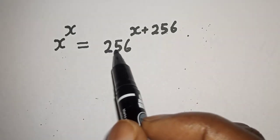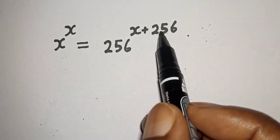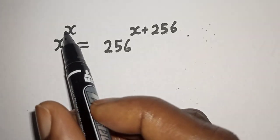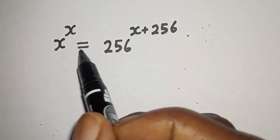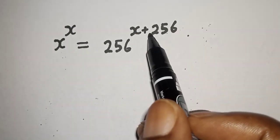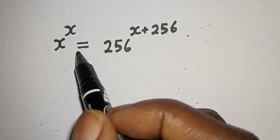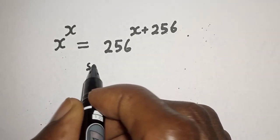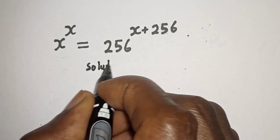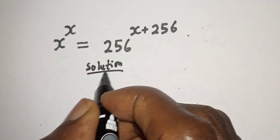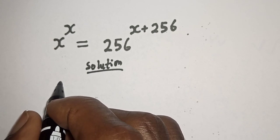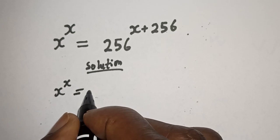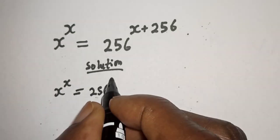x raised to power x is equal to 256 raised to power x plus 2. Hi everyone, welcome to my class. In this class I want to find the value of s from this equation: s raised to power s is equal to 256 raised to power x plus 2. But before we proceed, please don't forget to like, share, comment and subscribe. Thank you.